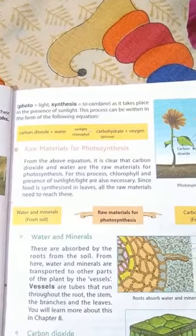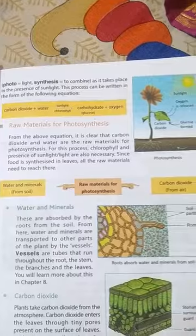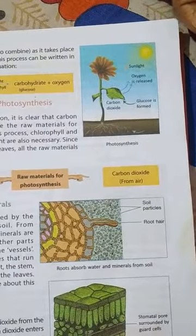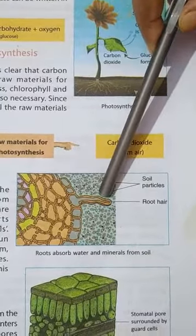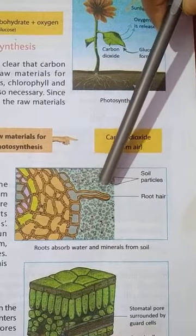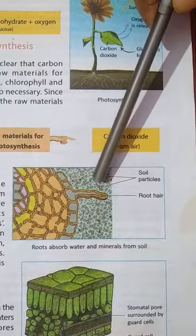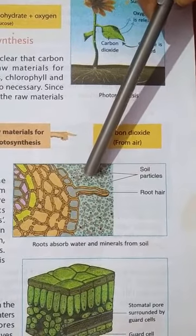Now we will study the raw materials for photosynthesis. The raw materials used are water, minerals, carbon dioxide, in the presence of sunlight and chlorophyll. The first raw material is water and minerals. Plants get water and minerals which are absorbed by the roots from the soil. Roots have root hairs which help in increasing the surface area of absorption. Water and minerals absorbed by the roots are transported to different parts of the plant by a network of tubes known as xylem.